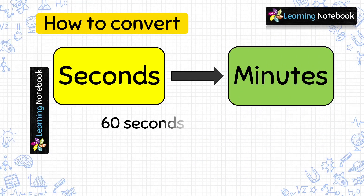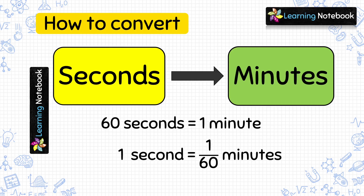To convert seconds into minutes, we first need to find the value of 1 second in terms of minutes. We know 60 seconds equals 1 minute, so 1 second would be equal to 1 divided by 60 minutes. Now, using this, let's see how to solve the related questions.